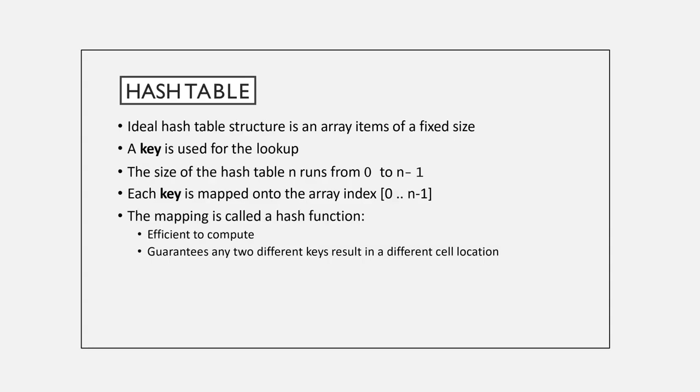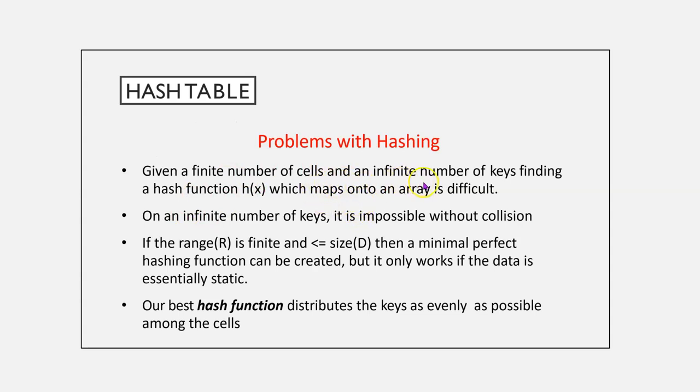Ideally, this would be efficient to compute and must guarantee, ideally, any two different keys result in a different cell location. There's problems, though. You're in a perfect function, but your data can't grow or shrink. Your sets have to be finite and match it. Our best hash function distributes the keys as evenly as possible among the cells.